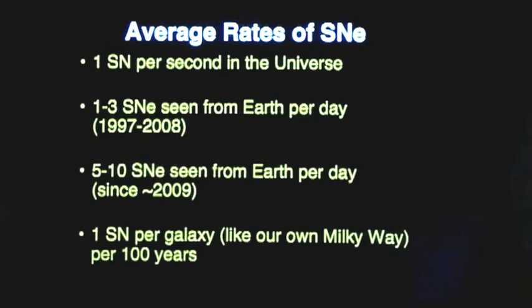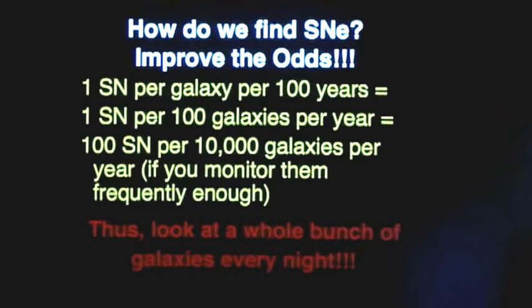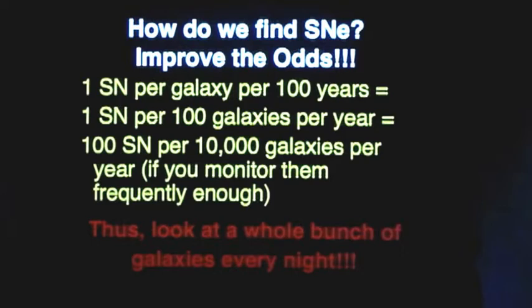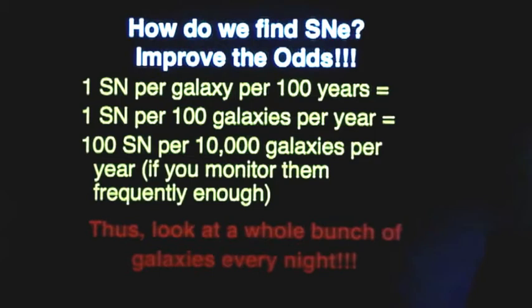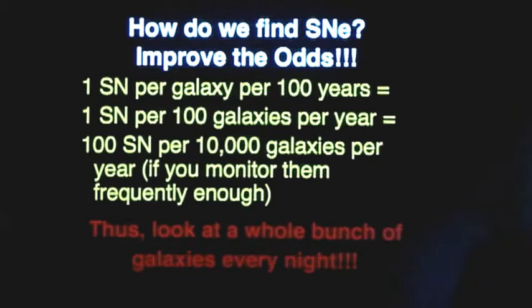So if there's only one supernova per galaxy per 100 years, that would take me quite a while to write a thesis. However, you can sort of re-spin that and say, well, it's one supernova per 100 galaxies per year. I've been in grad school for seven years, or I was in grad school for a little over six years. That's only six supernovae. That's starting to get a little bit ugly. I can do a little bit, but not much.